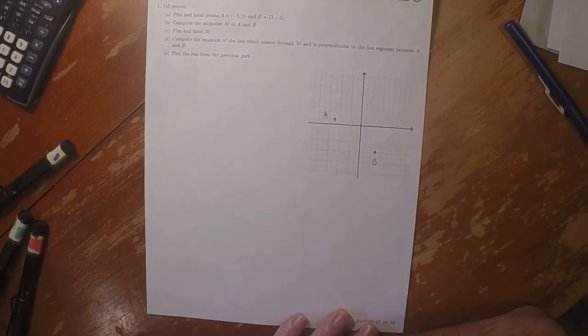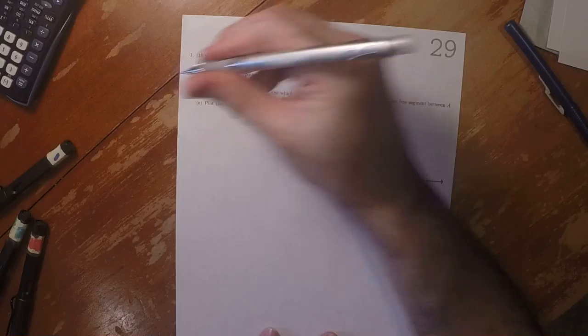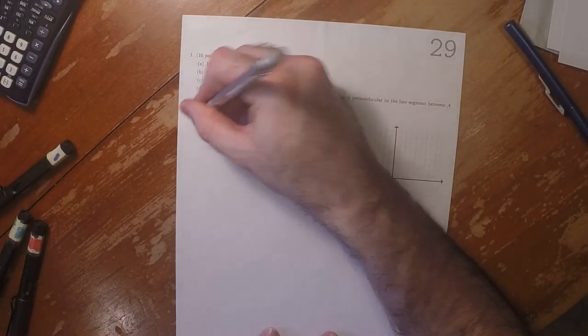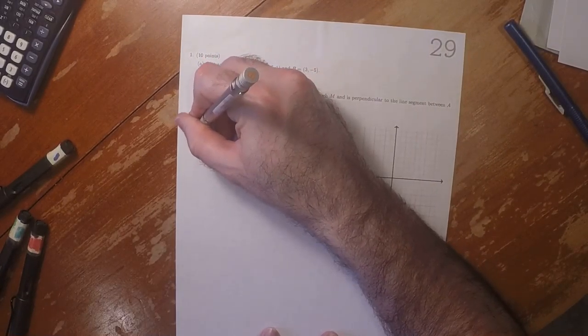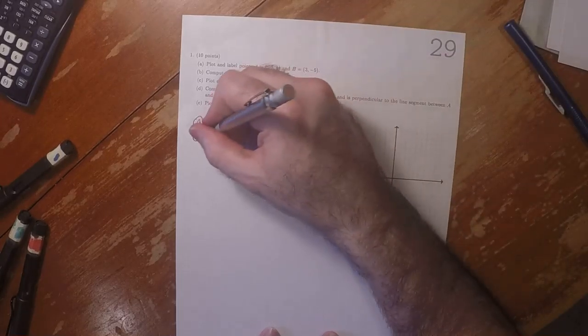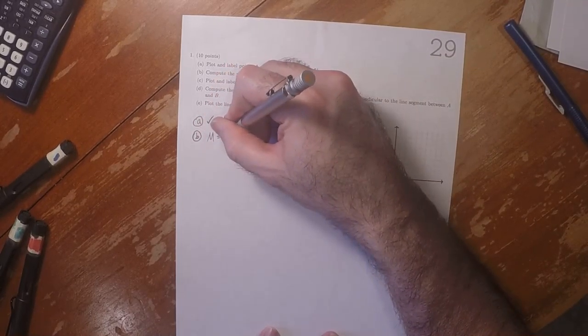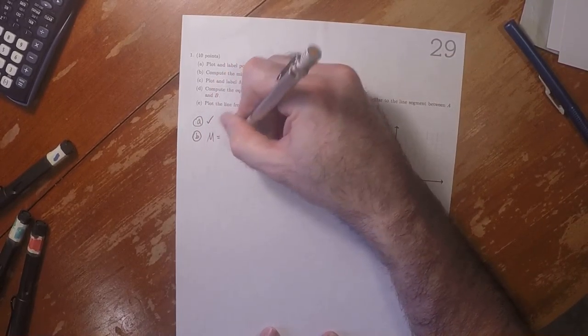Compute the midpoint. Okay, so then we did A, B. The calculation is M is A plus B over 2.